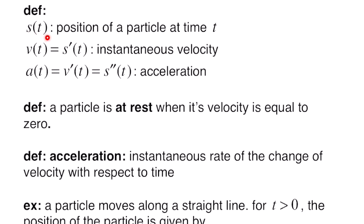For higher derivatives: s(t) is the position of a particle at time t. v(t) represents velocity and equals the derivative of the position function. a(t) is acceleration and equals the derivative of velocity, or the second derivative of position. A particle is at rest when its velocity equals 0. Acceleration is the instantaneous rate of change of velocity with respect to time.